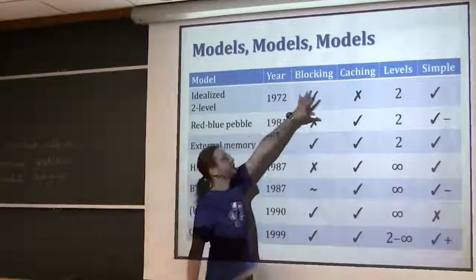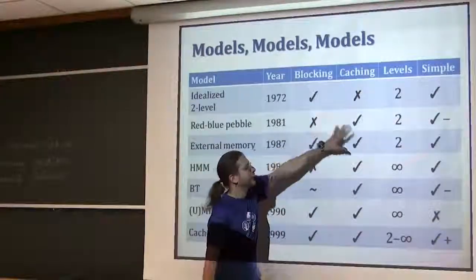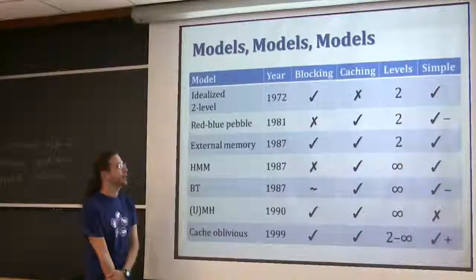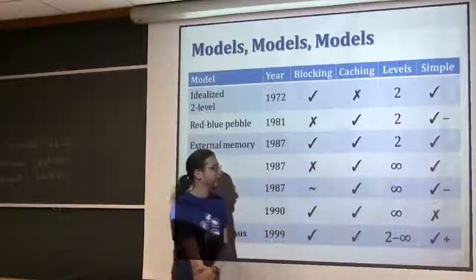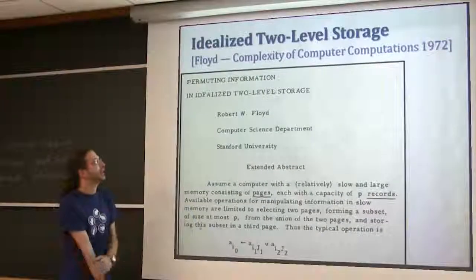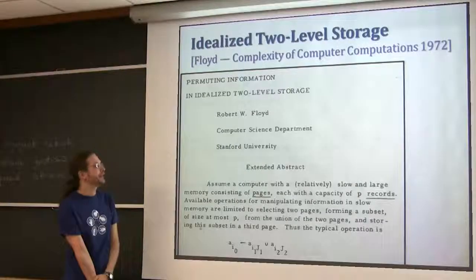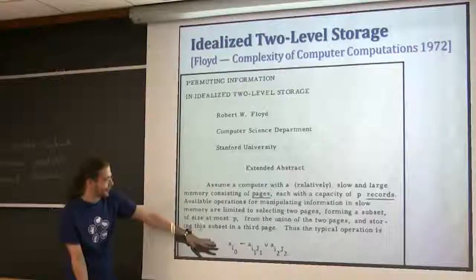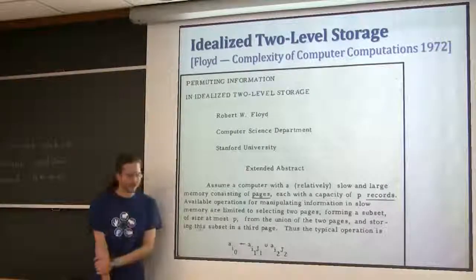There are a couple of key features in a cache that we want to model, and then there's some measure of simplicity, which is a little hard to define. The goal is to get all four of these things at once, and we get that more or less by the end. The first section is on this idealized two-level storage, which was introduced by Bob Floyd in 1972. This is what the first page of the paper looks like - it's probably typeset on a typewriter with hand underlining. Good old days of computer science.